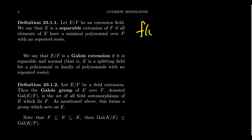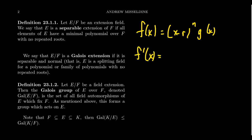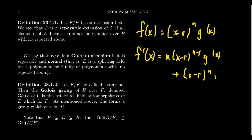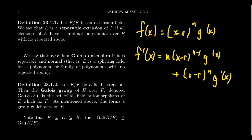If you have a polynomial f(x) with a repeated root, you write it as (x - r)^n · g(x). By the product rule and chain rule, the derivative is n(x-r)^(n-1)·g(x) + (x-r)^n·g'(x). Since n > 1, there is still a factor of (x - r) dividing f'(x). So (x - r) divides both f and f', meaning the function and its derivative share a common divisor.